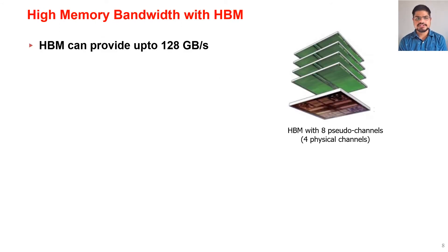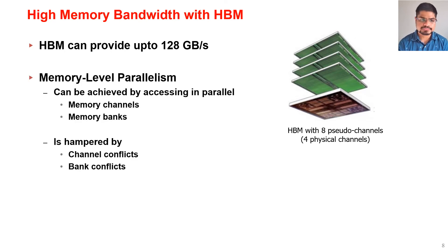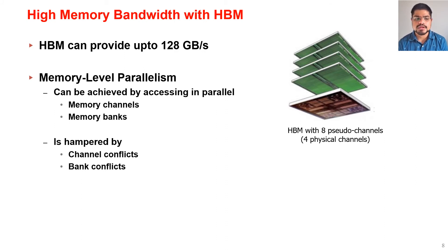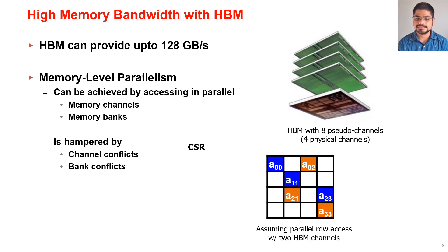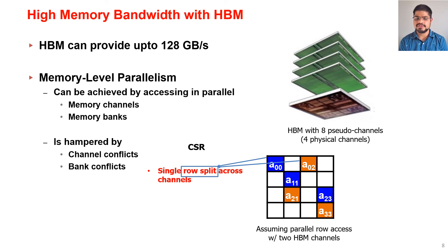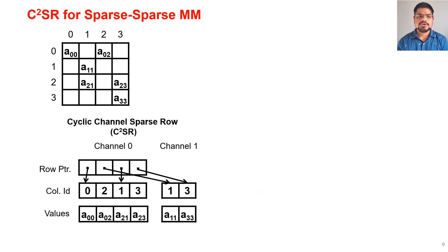Modern 3D stacked memory technologies such as HBM can provide memory bandwidth of up to 128 Gbps with eight channels. However, to achieve this bandwidth we need to exploit memory-level parallelism by accessing different memory channels and banks in parallel — which is hampered by bank and channel conflicts. In CSR, a single row is split across different channels, so row-level parallelization incurs channel conflicts. To solve these issues, we propose a new sparse storage format called Cyclic Channel Sparse Row, or C²SR.